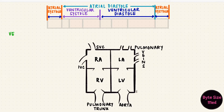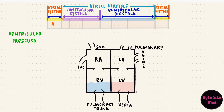We'll bring back the schematic heart and we're going to be looking at the ventricular pressure changes during atrial systole, ventricular systole, and ventricular diastole. During atrial systole, the atria contract, pushing the last bit of blood into the ventricles. That will cause the ventricular pressure to rise a little as blood gets pushed in.